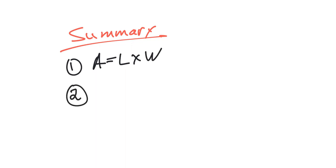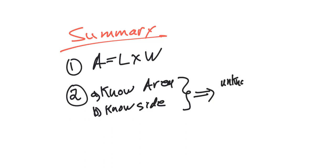Now, two. If we have the area, if we know the area and then we know a side, then this means the unknown side is equal to the area of the shape divided by the known side. And that's it.